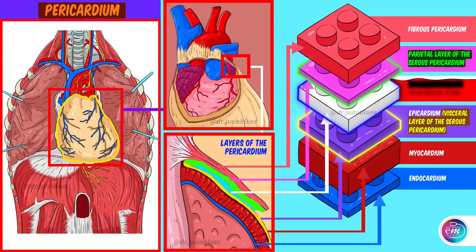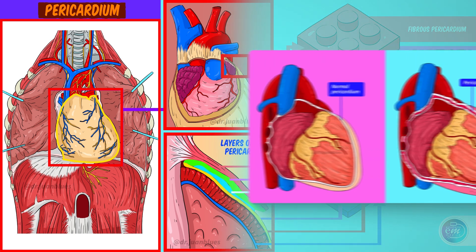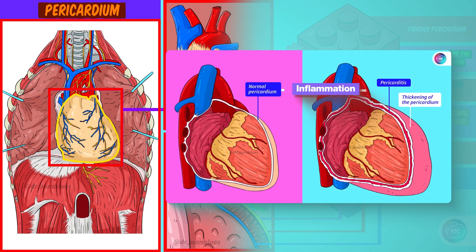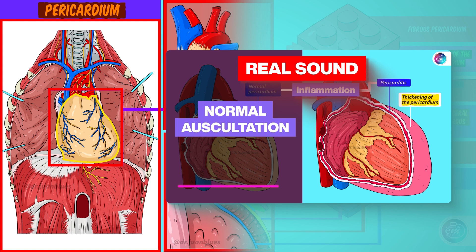Speaking of illnesses related to the pericardium, we should mention that pericarditis is an inflammation of the pericardium. This can cause it to thicken, or for the surface of its layers to become rough. Thus, when they rub together, they produce a very particular sound on auscultation, which is described as a pericardial rub.